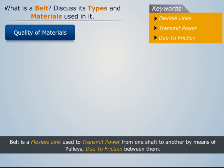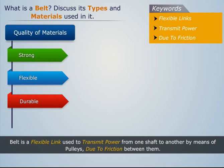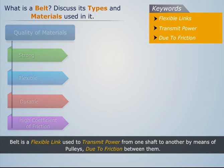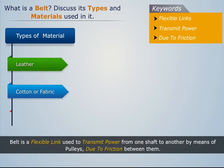Now let's discuss the requisites of the materials used in making belts. The material used for making belts must be strong, flexible, durable, and should have a high coefficient of friction. The three main materials which fulfill these requirements and are extensively used in making belts are: leather, cotton or fabrics, and rubber.